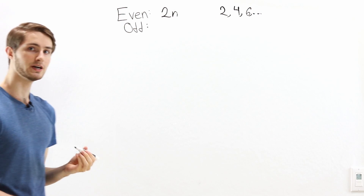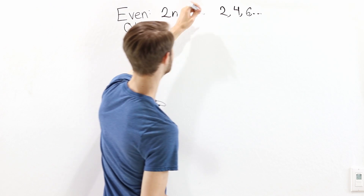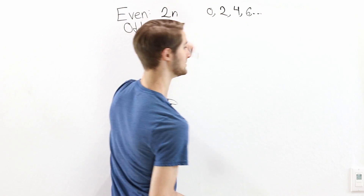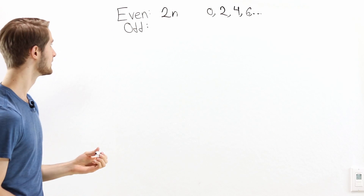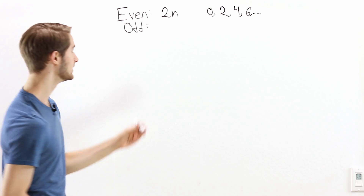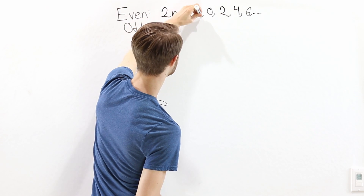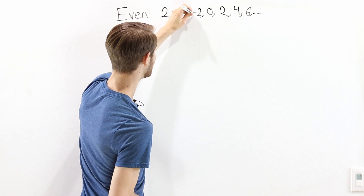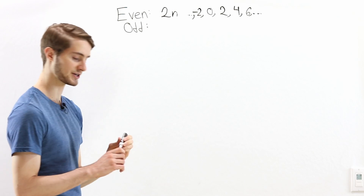We could also go the other direction. 2 times 0 is 0, which means 0 is an even number. 2 times negative 1 is negative 2, and we could also have negative 4, and so on in this direction.